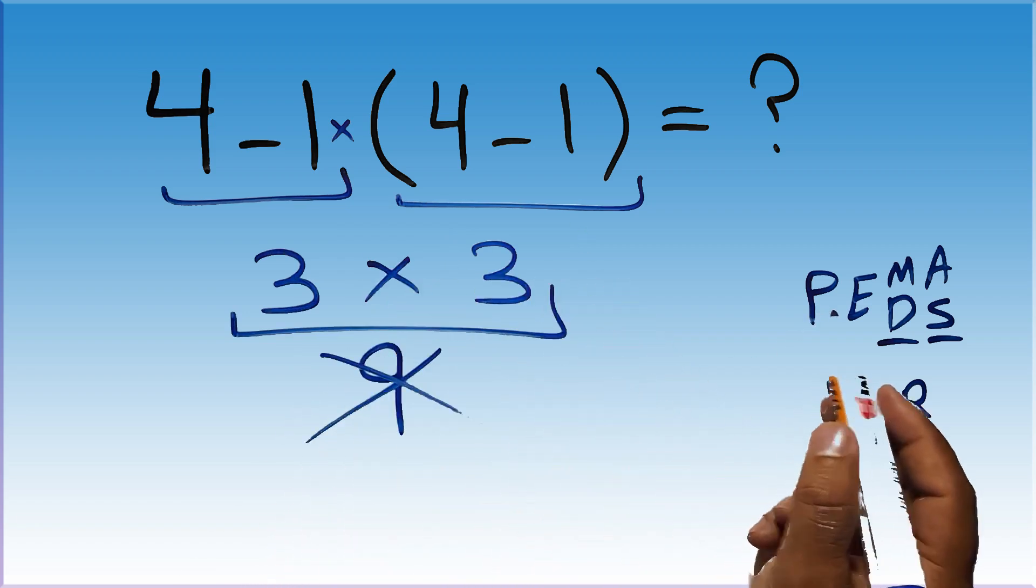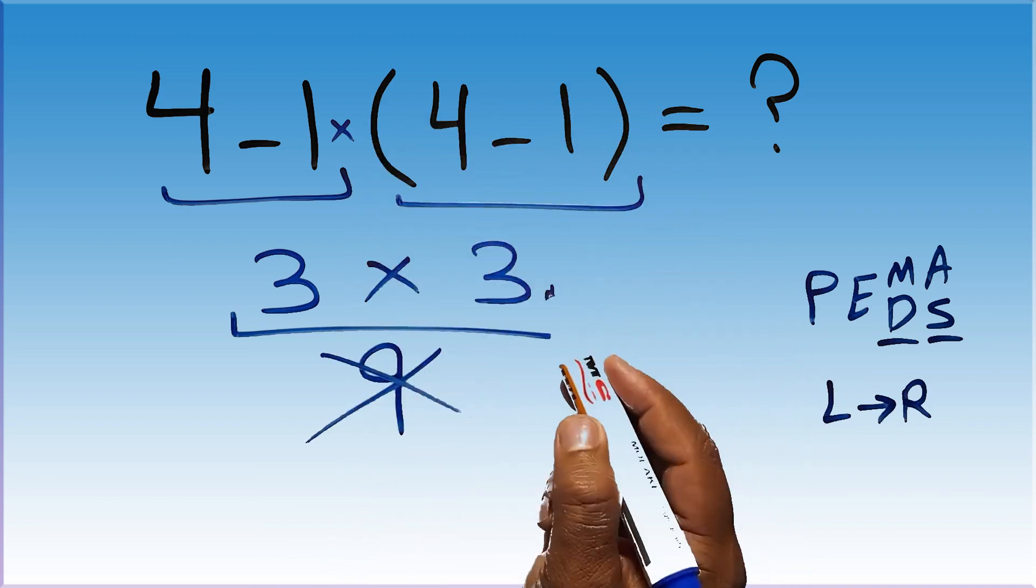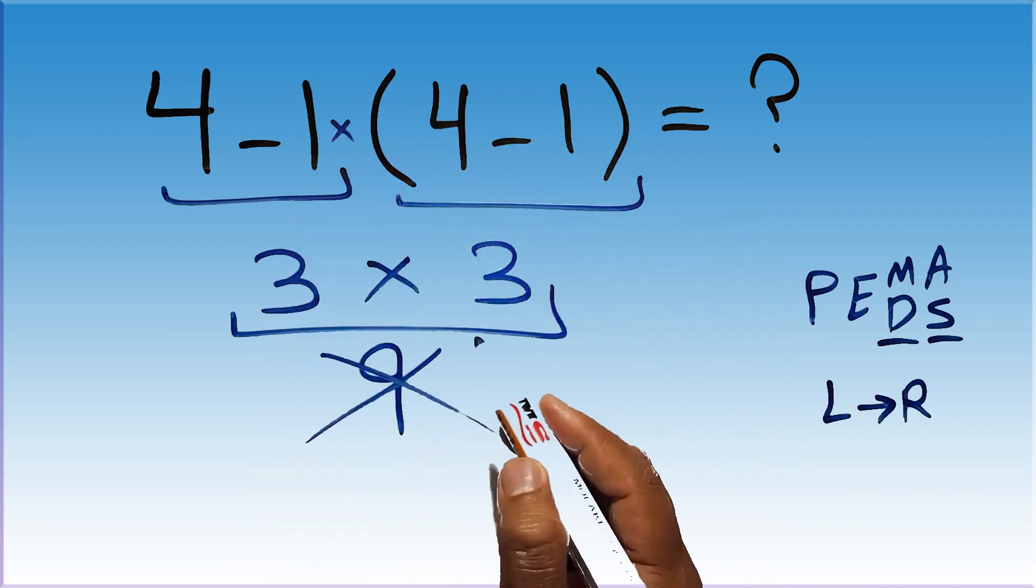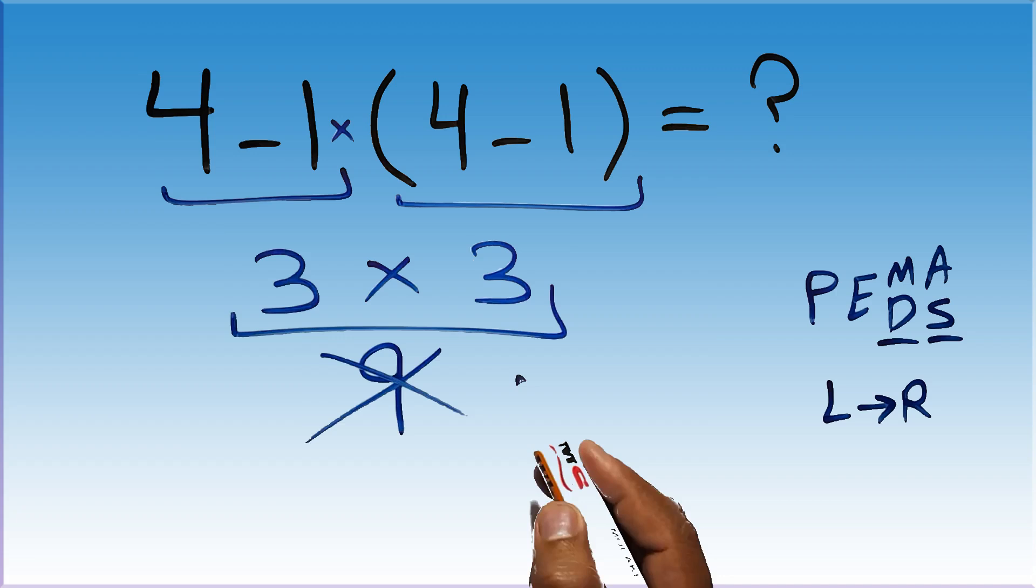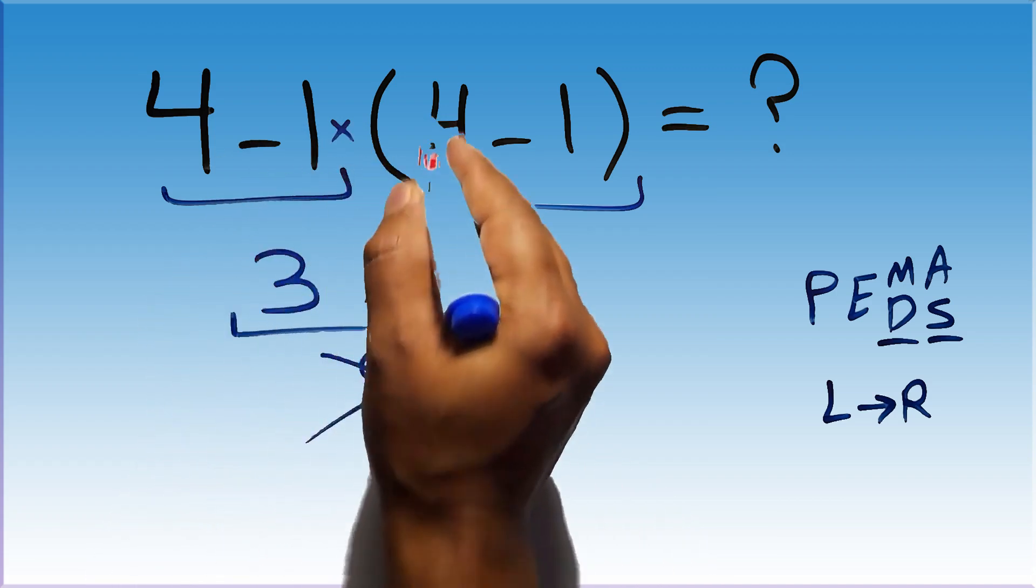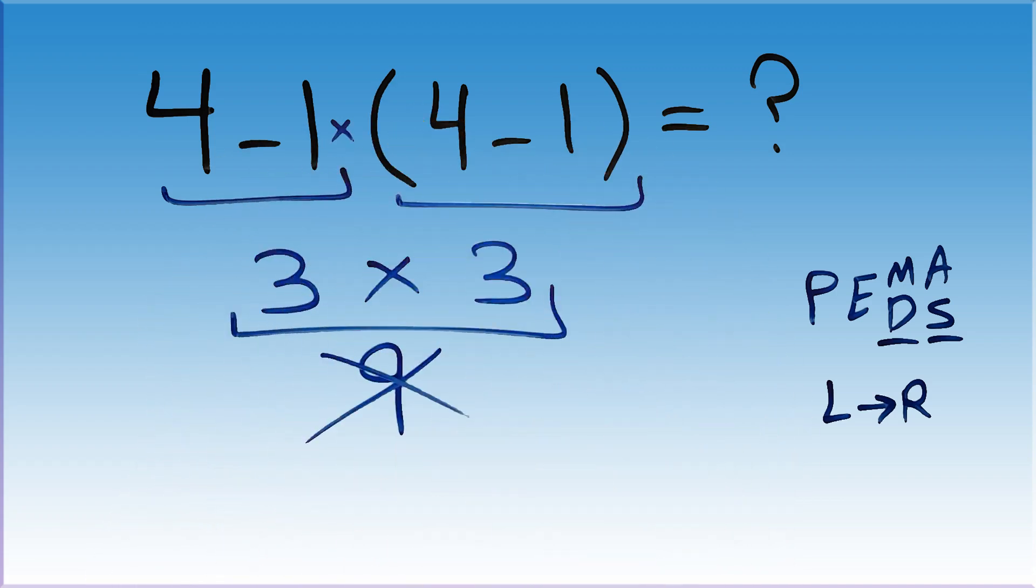So here, according to the PEMDAS, first we have to do this parentheses, then this multiplication, and finally this subtraction. If we do this subtraction before this multiplication or this parentheses, it is wrong.